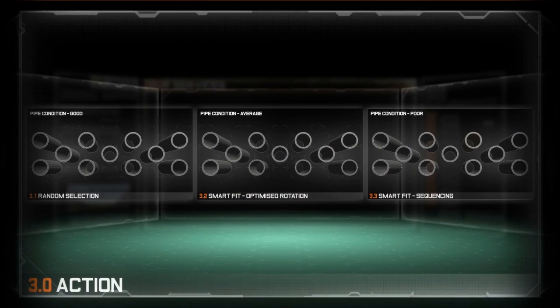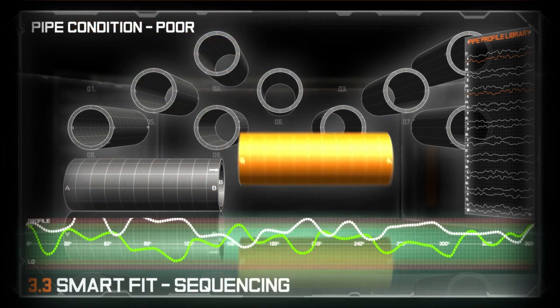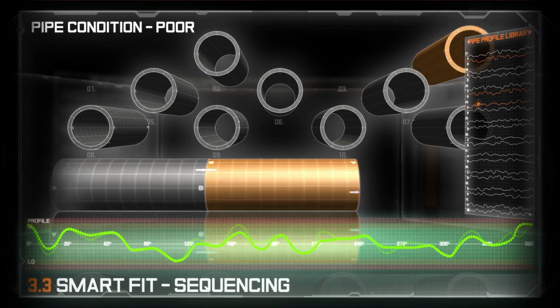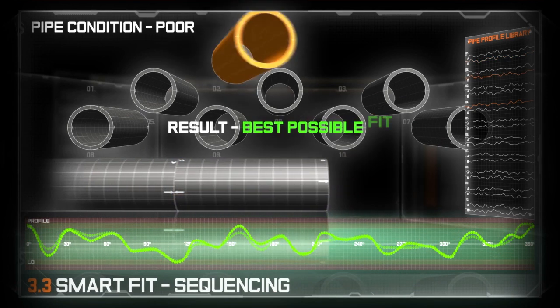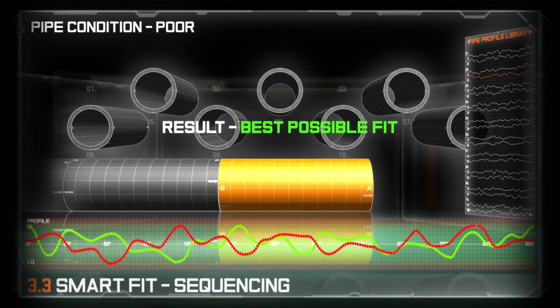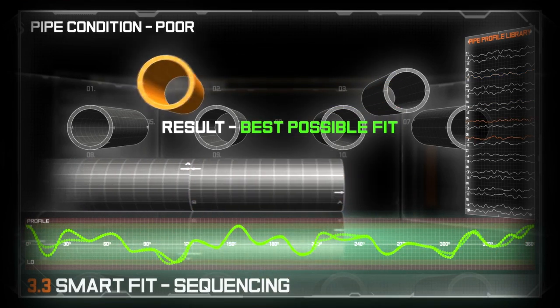The third course of action is SmartFit sequencing and is only recommended for pipes in poor condition. In this case the SmartFit program will re-sequence the pipe selection, matching one pipe end with another. This coupled with subsequent optimized rotation ensures the best possible fit of all the pipes.